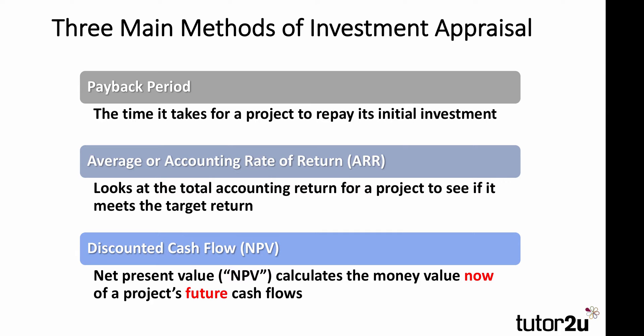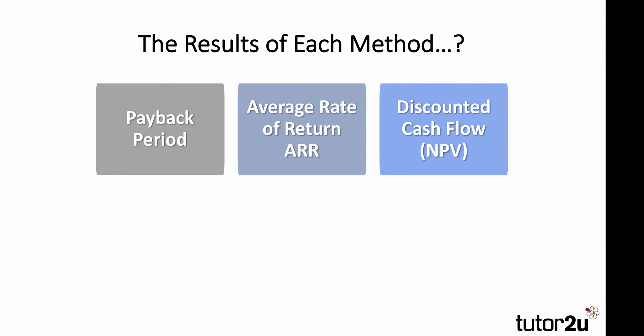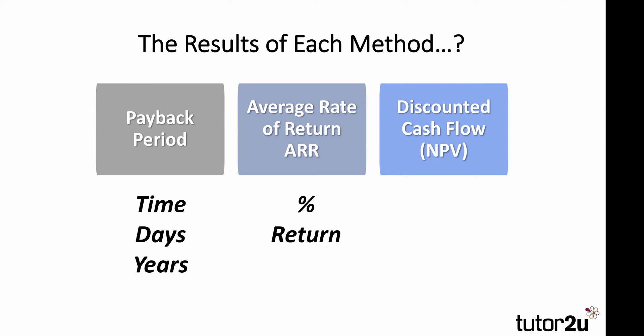So those are the three main methods. You need to be aware of how to calculate all three, but also to be able to interpret the data from them and perhaps consider the issues arising from the investment appraisal data for a particular business. Each method has a slightly different result, so make sure if you're calculating one and writing down the answer that you pick the right method. Payback period is measured in time — often years and months or years and days. ARR is measured in percentage terms, so all answers need a percentage sign. And discounted cash flow or net present value is measured in monetary value — so usually in pounds for UK exams.